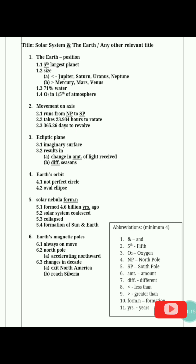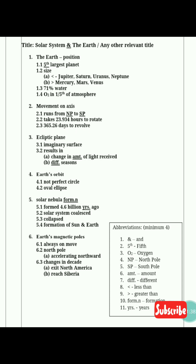We can define size separately in sub-headings A and B. As we read, Jupiter, Saturn, Uranus, Neptune are bigger than Earth, and Mercury, Mars, and Venus are smaller than it. Sub-heading 1.3: 70% water on Earth. Sub-heading 1.4 covers oxygen — here we use O₂ as a symbol. We can use signs and symbols as abbreviations. Since we need minimum 4 abbreviations, using scientific symbols helps. Oxygen makes up 1/5th of the Earth's atmosphere.